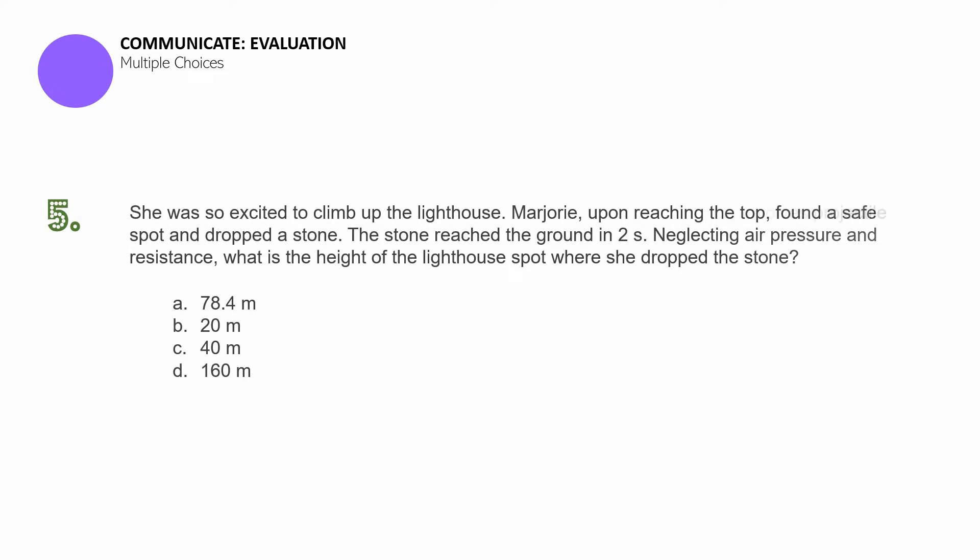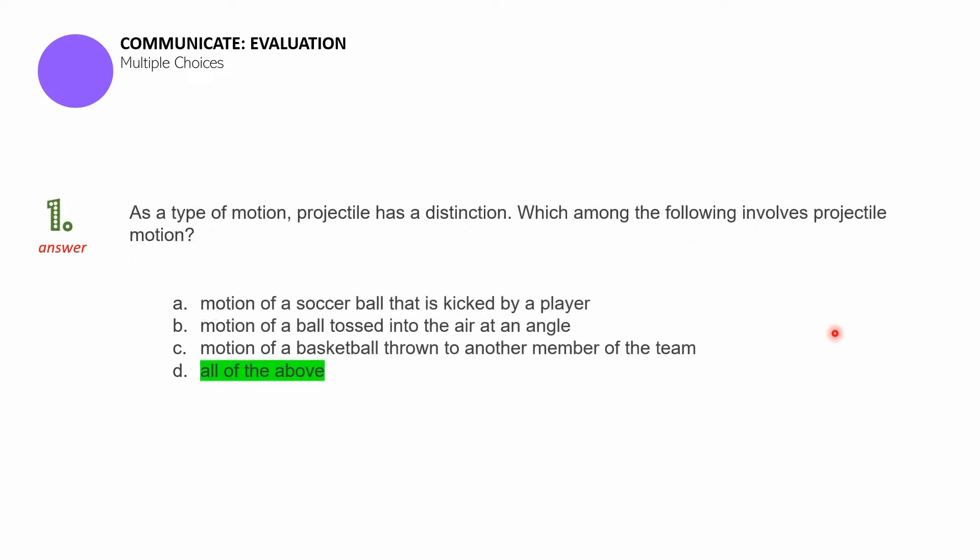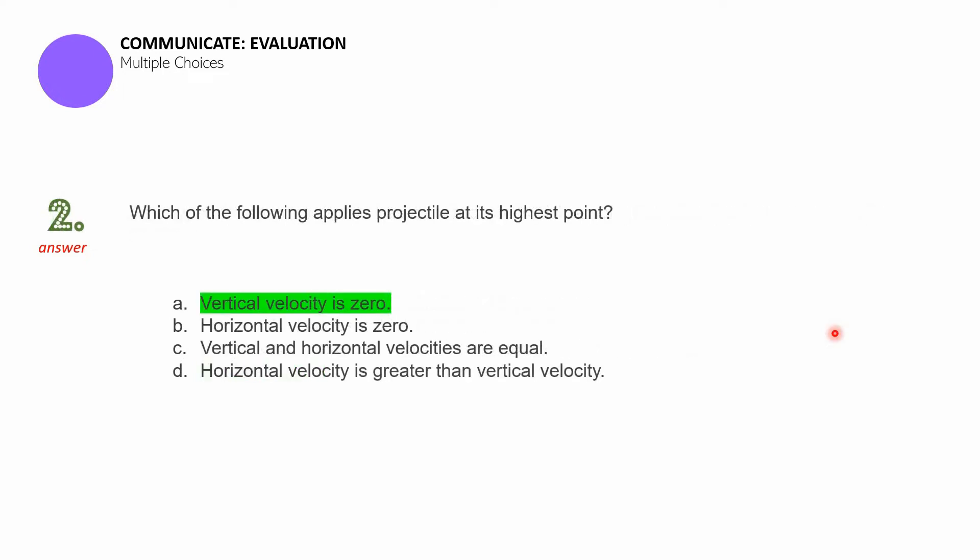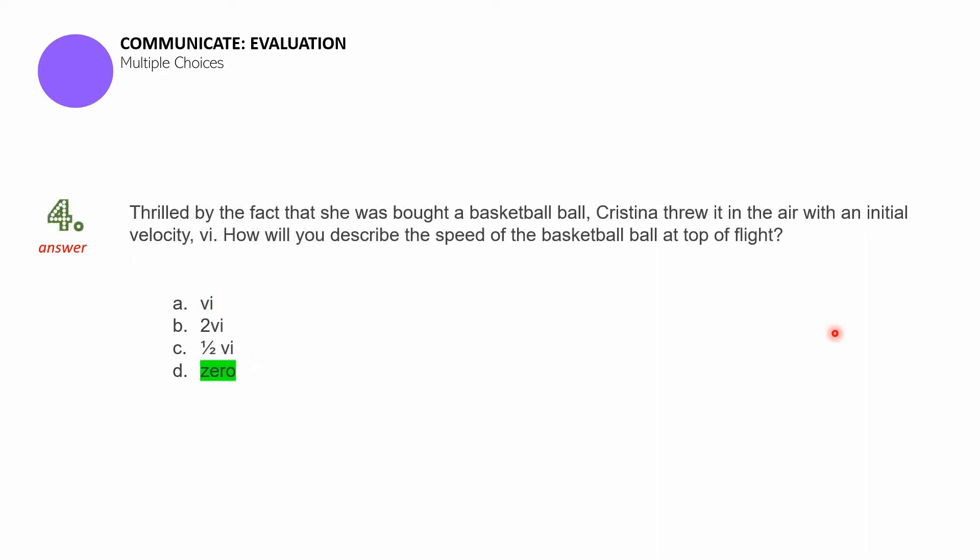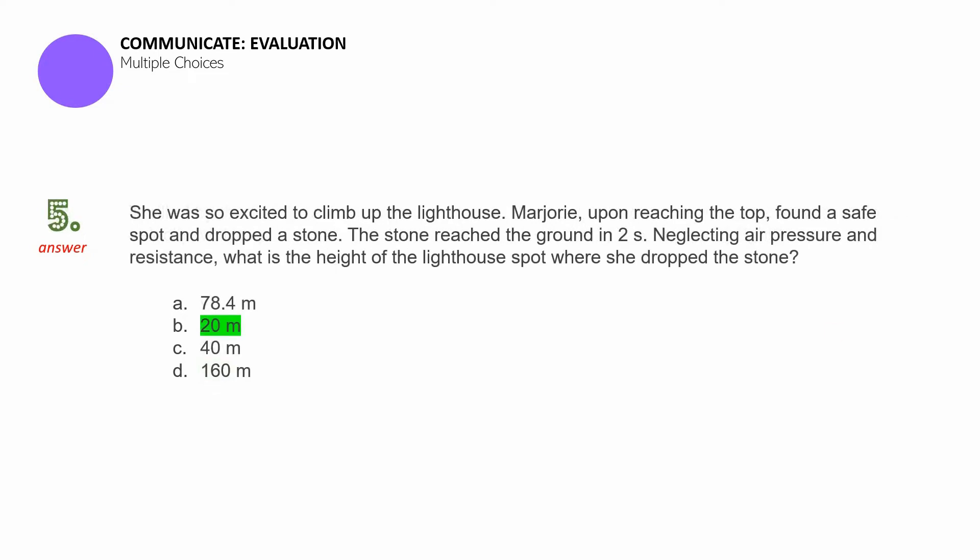Let's now proceed to answering these questions. For the first question, the answer is D, all of the above. For question number two, the answer is A, vertical velocity is zero. For question number three, the answer is 10.20 seconds. For question number four, the answer is zero. So the speed or velocity at the top of the flight is equal to zero. Question number five, the answer is 20 meters. Make sure that you indicate your score at the upper right-hand corner of your sheet of paper or of that page you used from your science notebook.